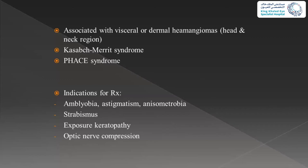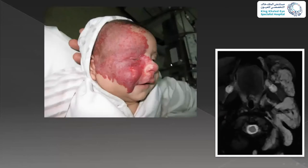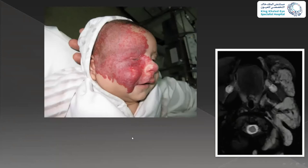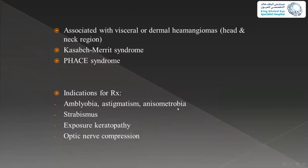It could be associated with facial syndromes — for example, a huge facial hemangioma involving the brain, neck, and other visceral structures. The indications for treatment are usually amblyopia caused by ptosis, astigmatism, or anisometropia, strabismus, exposure keratopathy, or optic nerve compression with deep orbital lesions.